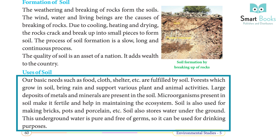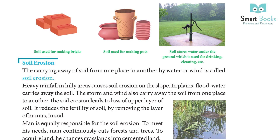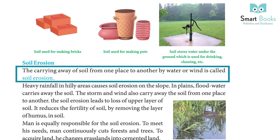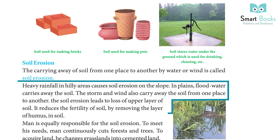The carrying away of soil from one place to another by water or wind is called soil erosion. Heavy rainfall in hilly areas causes soil erosion on the slope. In plains, flood water carries away the soil. The storm and wind also carry away soil from one place to another. Soil erosion leads to loss of the upper layer of soil and reduces the fertility of soil by removing the layer of humus.